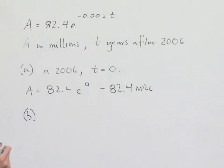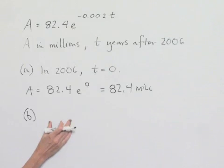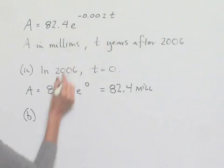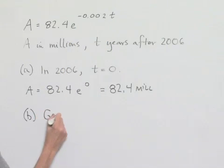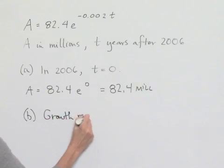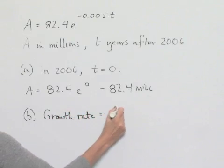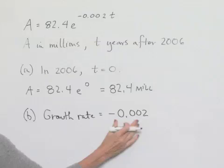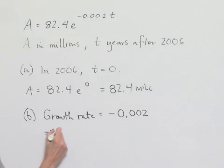In Part B, we're asked to determine whether the population of Germany is increasing or decreasing. Our rate is given by the coefficient of t in our formula. And we note that the growth rate, which is equal to this negative 0.002, because it's a negative value, indicates that the population is decreasing.